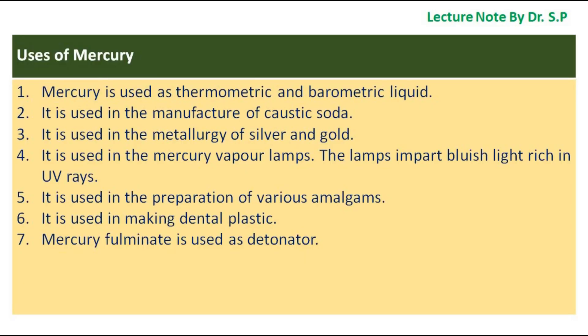Uses of mercury: Mercury is used as a thermometric and barometric liquid. It is used in the manufacture of caustic soda. It is used in the metallurgy of silver and gold. It is used in mercury vapor lamps.